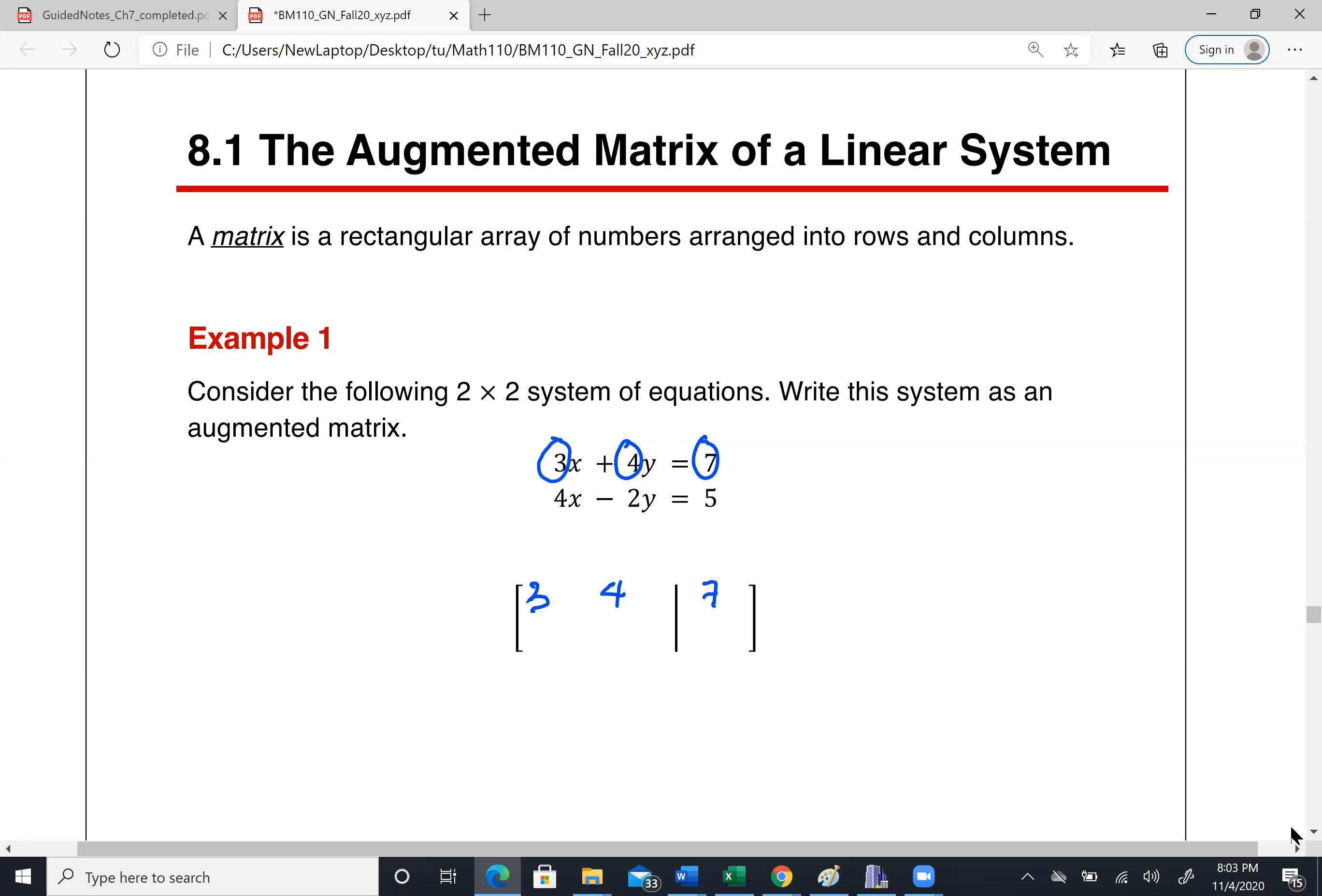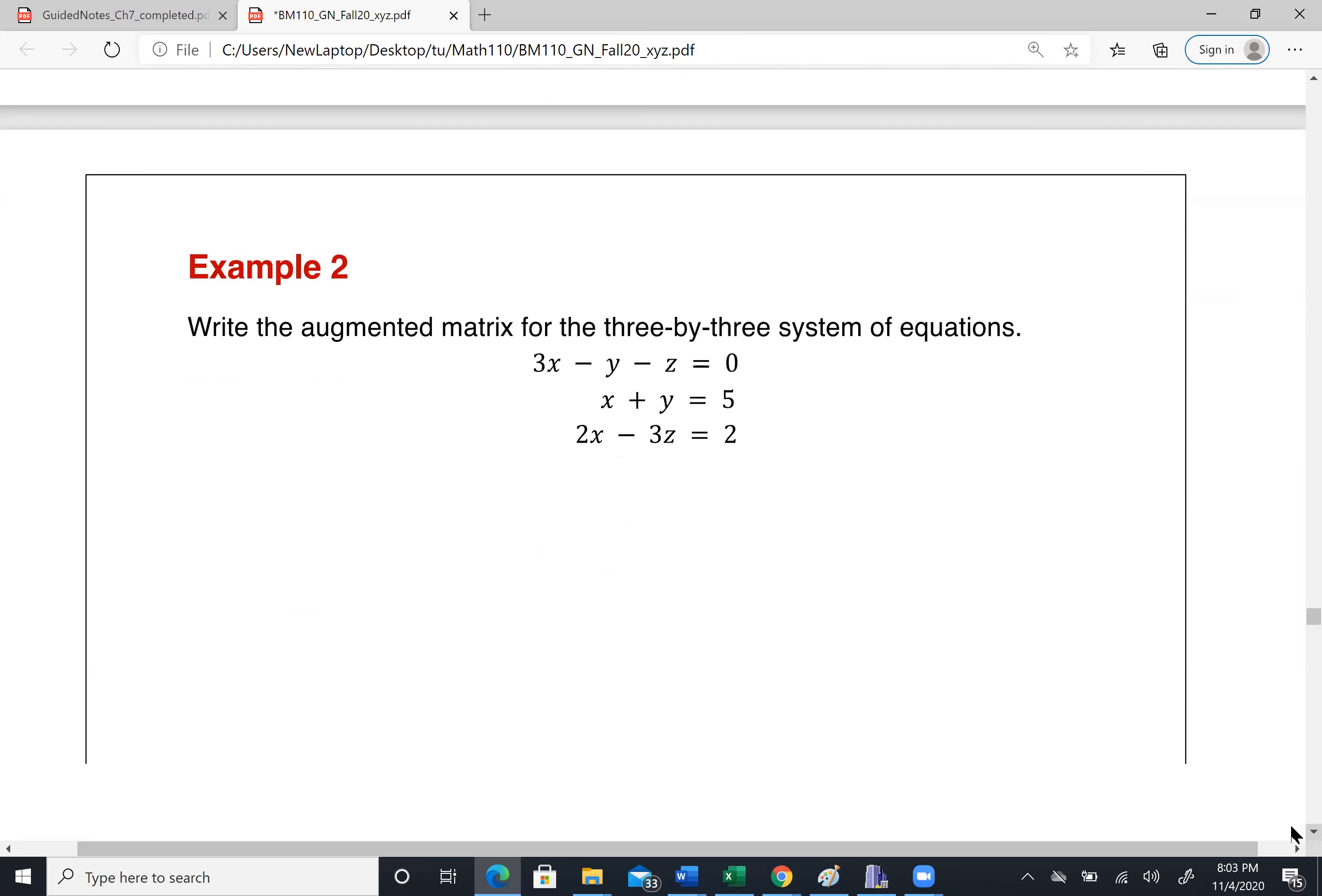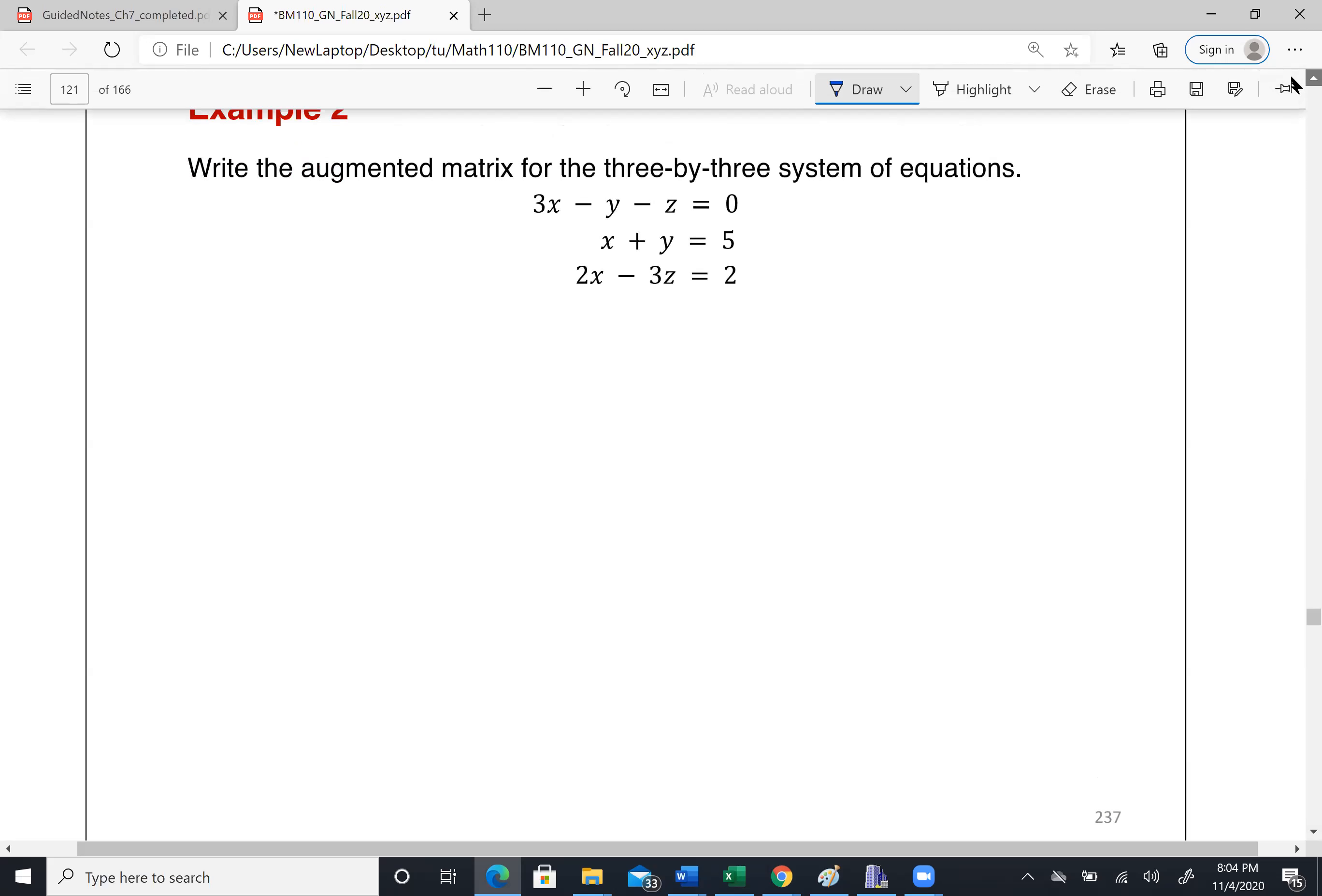And the second one have 4, negative 2, 5. So I put 4, negative 2, and 5. So that is the augmented matrix for this system. Let me clean up this so you can see it. All right. So now I'm gonna move down and move to the next example.